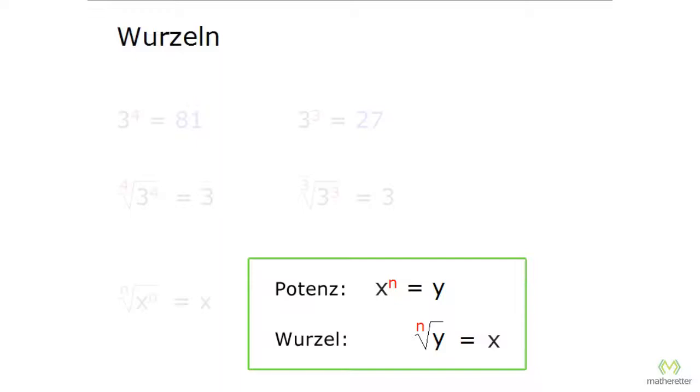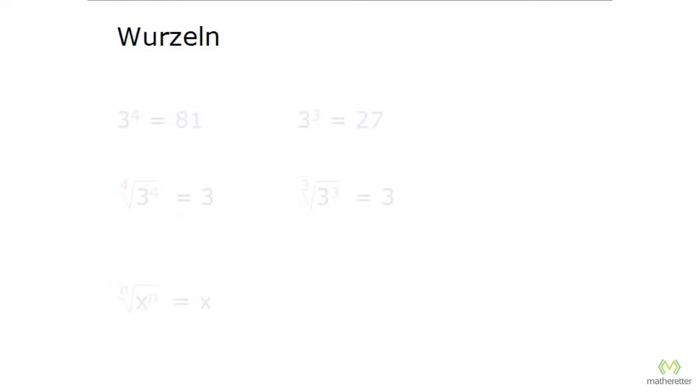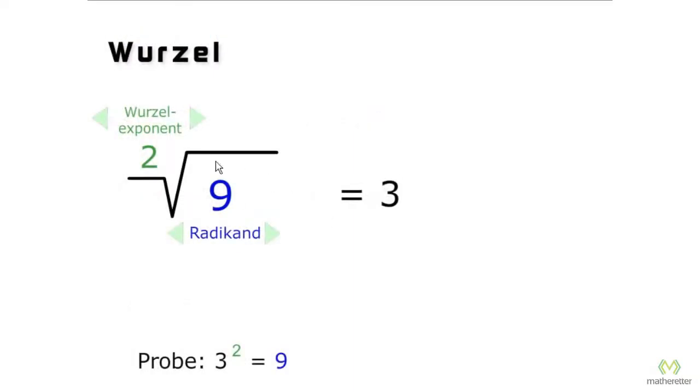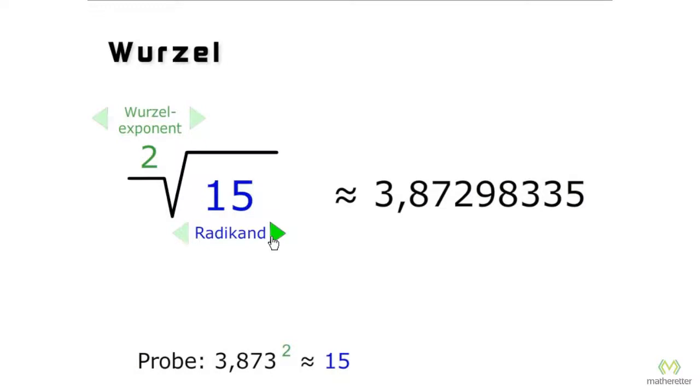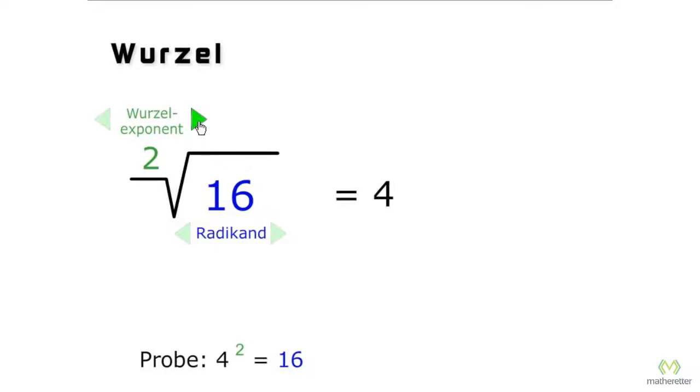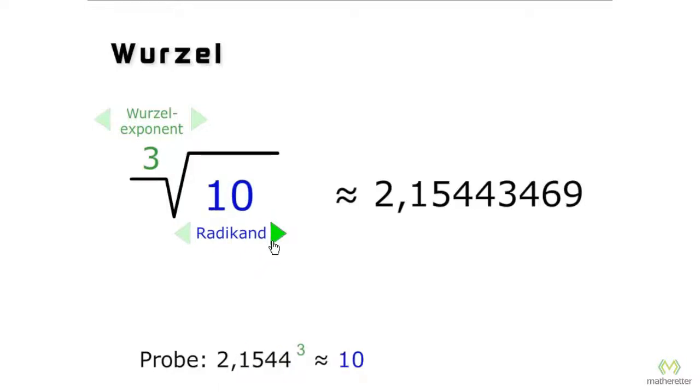If you have problems with roots, you can find a program on our website to practice with. The 2nd root of 9 is 3 because 3 squared is 9. The 2nd root of 16 is 4 because 4 squared is 16. You can also change the root exponent. Many values often have decimal places which are then rounded. Don't let that bother you.